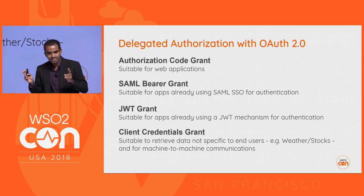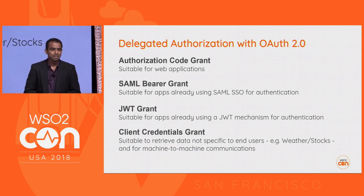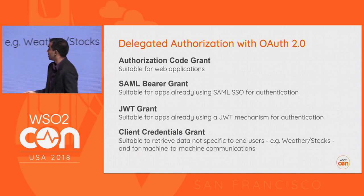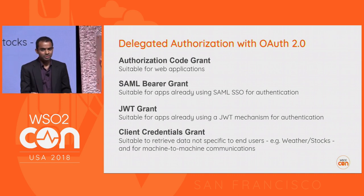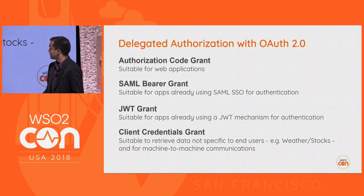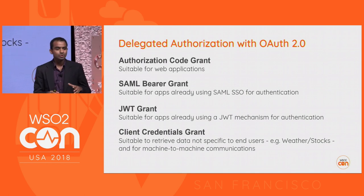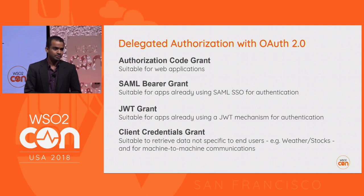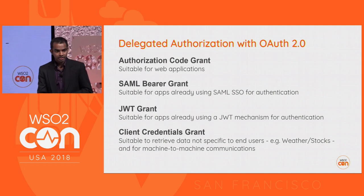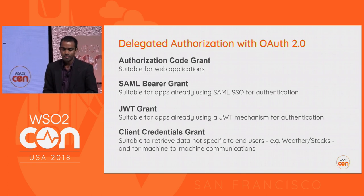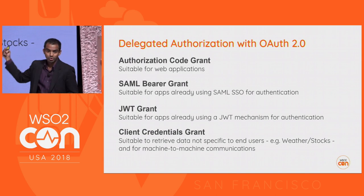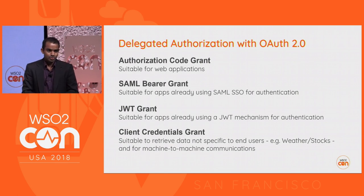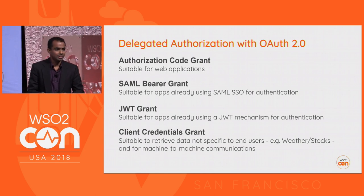There are multiple grants — essentially use cases for how to get things done using OAuth. The most widely used include the authorization code grant and the SAML bearer grant. If your app is already doing SAML SSO, you can exchange your SAML token for an OAuth access token. Similarly, if you have JWT-based authentication, you can exchange that for an OAuth access token. SAML and JWT are authentication protocols, while OAuth is about authorization — exchanging an authentication token for an authorization token.